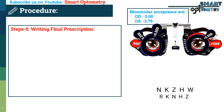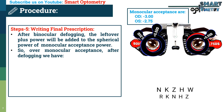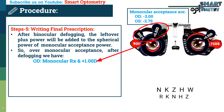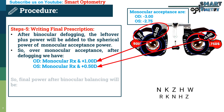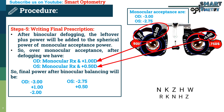Step 5 — Writing final prescription: after binocular defogging, the leftover plus power is added to the spherical power of the monocular acceptance. In this example, the leftover power is plus 1 dioptre in the right eye and plus 0.50 dioptre in the left eye. Right eye: monocular acceptance was minus 3; adding leftover plus 1, the final power becomes minus 2. Left eye: monocular acceptance was minus 2.75; adding leftover plus 0.50, the final power becomes minus 2.25 dioptre.